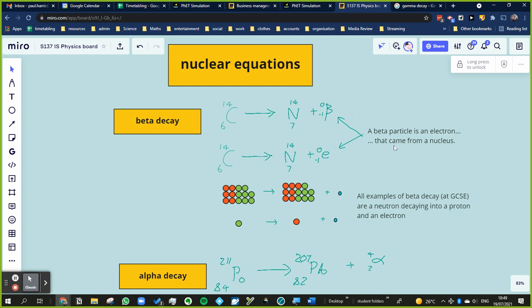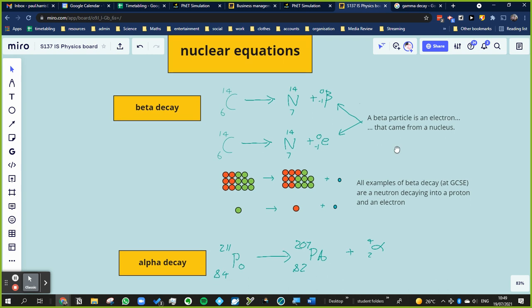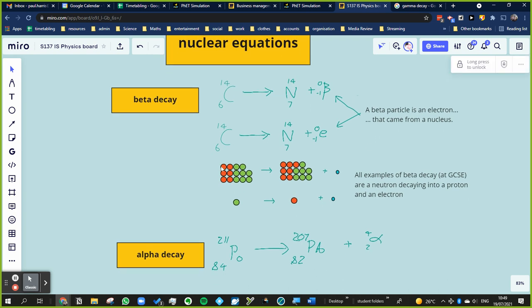but it's an electron that came from a nucleus. When you look more closely at this decay equation, you realize that if there were six protons and eight neutrons before, and there were seven protons and seven neutrons afterwards, because we didn't see any neutron being emitted or any proton being added, what must have happened is a neutron turned into a proton and also an electron.